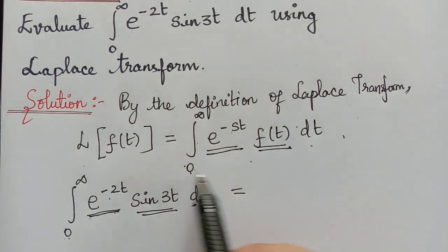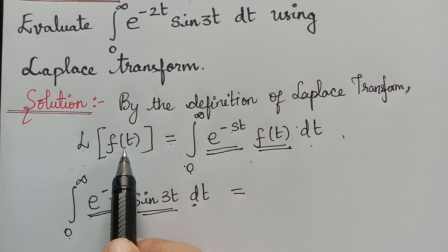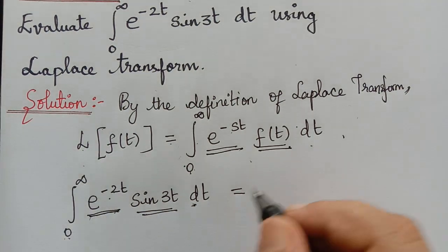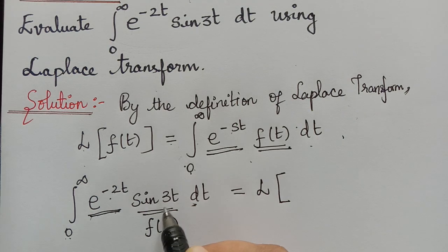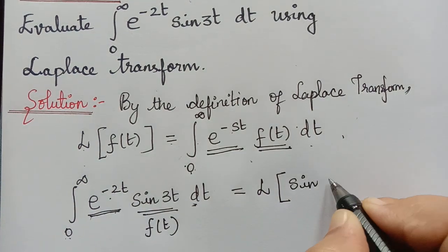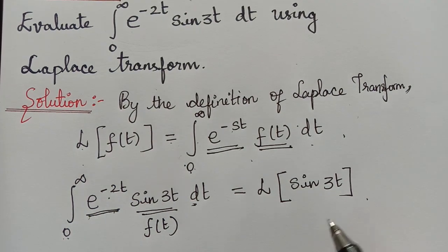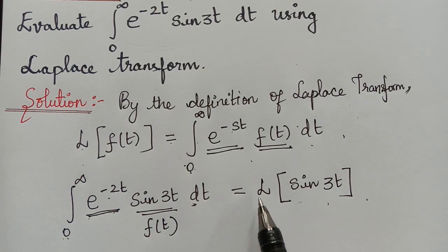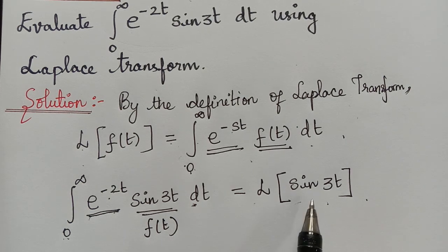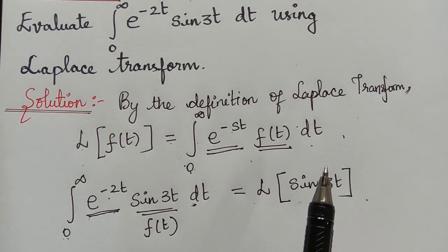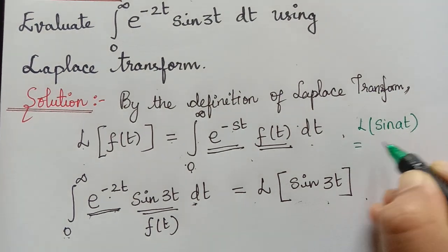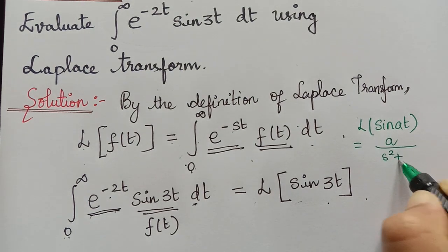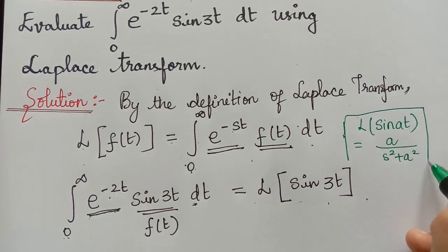Therefore the given integral is equal to the Laplace transform of f of t, which is sin 3t. Now by the results on Laplace transform, we know that the Laplace transform of sin at is equal to a divided by s squared plus a squared. We will be applying that result here.